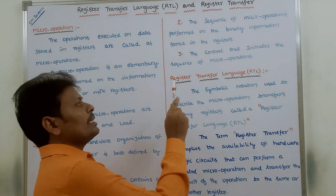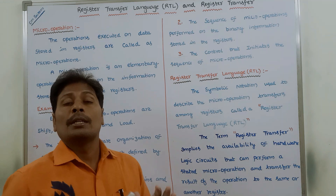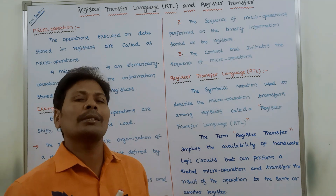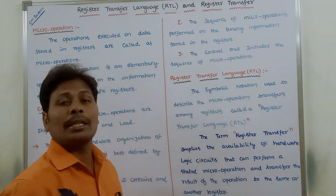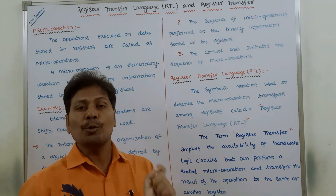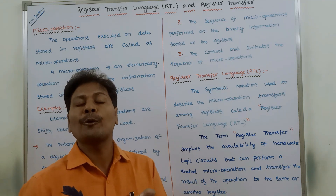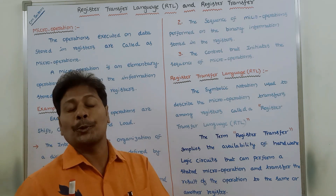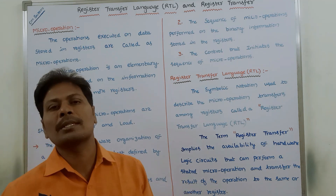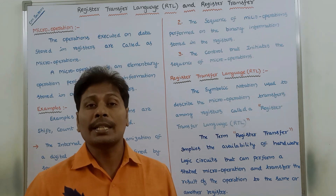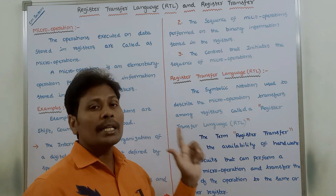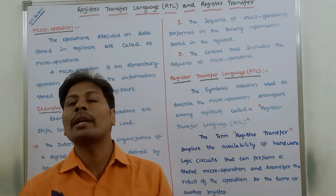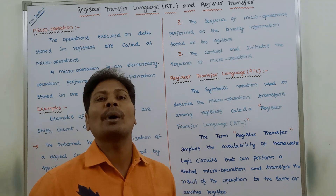Next, what is register transfer language? The symbolic notation used to describe the micro operation transfers among the registers can be called register transfer language. Simply, by using some symbolic notations, we have to perform the micro operations on the information stored in the registers. For that purpose, we use one language — that language is register transfer language. In register transfer language, we use symbolic notations to perform several micro operations using information stored in registers.